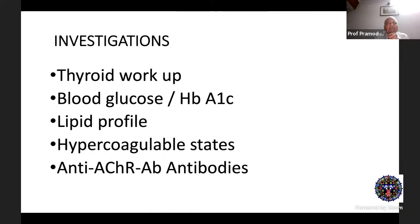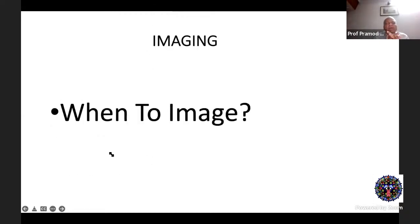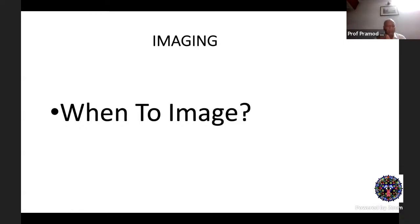Investigations to consider include thyroid workup, blood glucose, HbA1c, lipid profile, and anti-AChR antibodies when myasthenia is suspected. For imaging, not all cases need immediate imaging. In our setting, for likely ischemic palsy you may wait up to three months; if not resolving, image then. Patients below 40 years and children always require imaging.